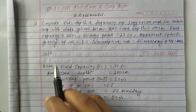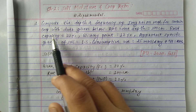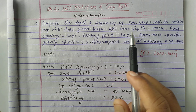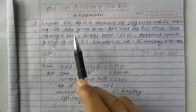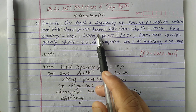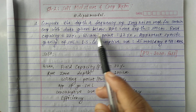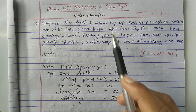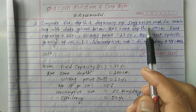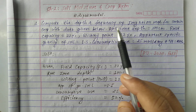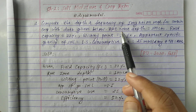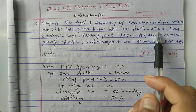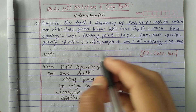Let's see the question: compute the depth and frequency of irrigation required for a certain crop with the data given below. We are given some data and we have to determine the depth and frequency of irrigation. The root zone depth is given as 100 cm.